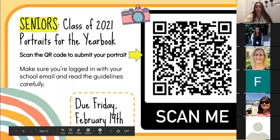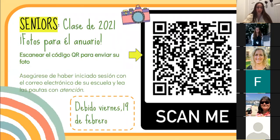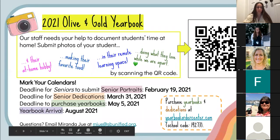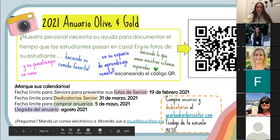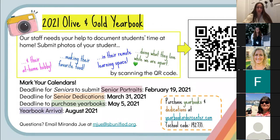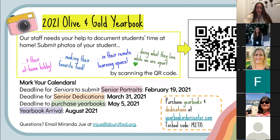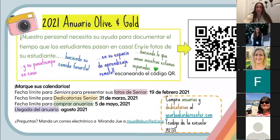For our yearbook this year, seniors are uploading a photo of themselves for their senior portraits. Submissions are due Friday, February 19th — you can scan the QR code or find links on your student's NEO newsfeed. The yearbook team also needs help: you can submit photos of your children in their remote learning spaces. Key deadlines: senior portraits due February 19th, senior dedications due March 31st, yearbook purchase deadline May 5th, and yearbook arrival is sometime in August 2021.